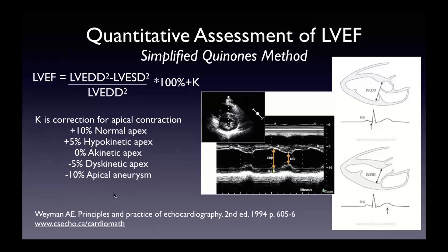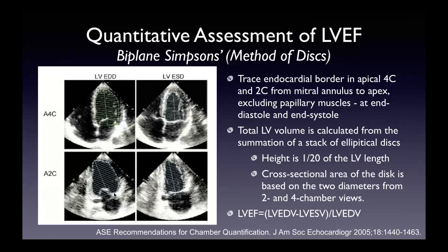The Simpson's biplane method — also known as the method of discs — from the ESE quantification guidelines: you trace the endocardial border in the apical four and two-chamber views from the mitral annulus, around the walls, tracing the endocardium all the way to the apex and around it. You want to exclude papillary muscles and trabeculations. You trace at endocardium to endocardium. The total volume is calculated from the summation of a stack of elliptical discs.